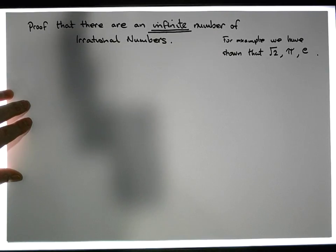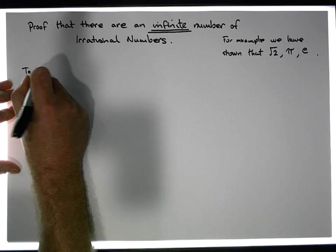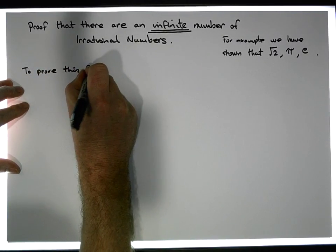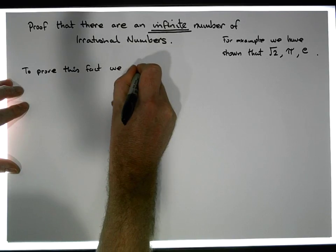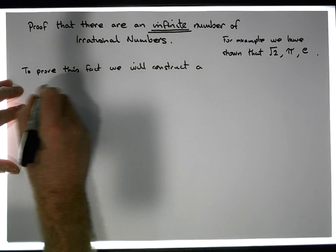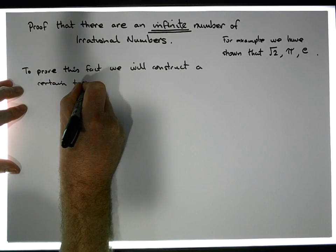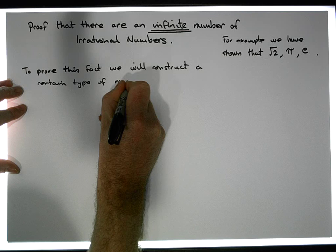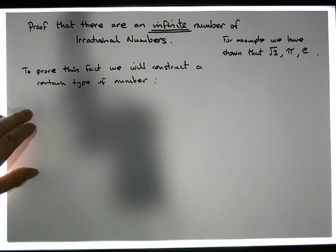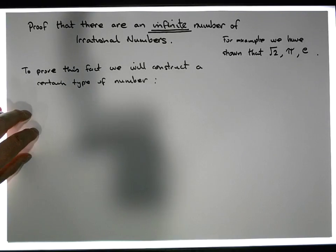The way we're going to do it is we're going to construct a special type of number. So to prove this fact, we will construct a certain type of number — namely, the number that we're going to consider is a plus b times the square root of 2.